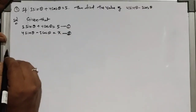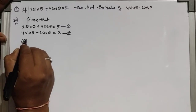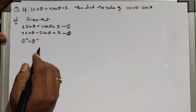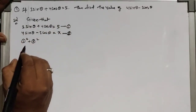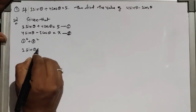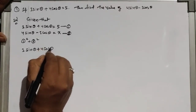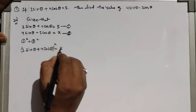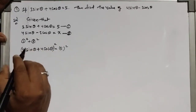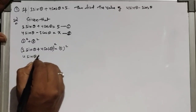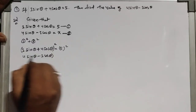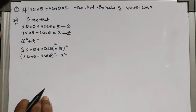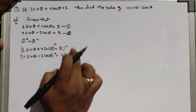We have to square both equations and add them. We add equation 1 squared plus equation 2 squared, combining the LHS parts on one side and the RHS parts on the other side. Squaring equation 1: (3sinθ + 4cosθ)² = 5². Squaring equation 2: (4sinθ - 3cosθ)² = x².